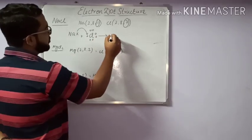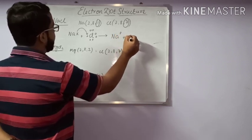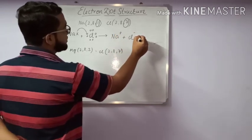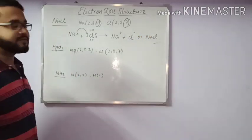So Na+ and Cl-, or we can write NaCl. It is very easy.